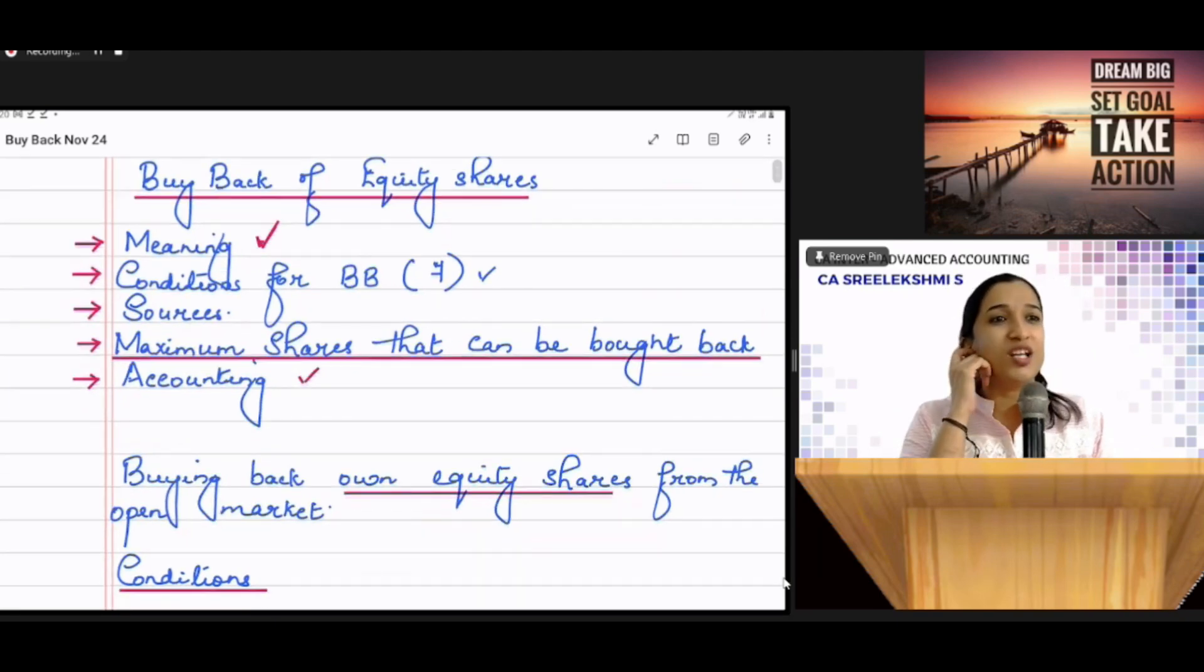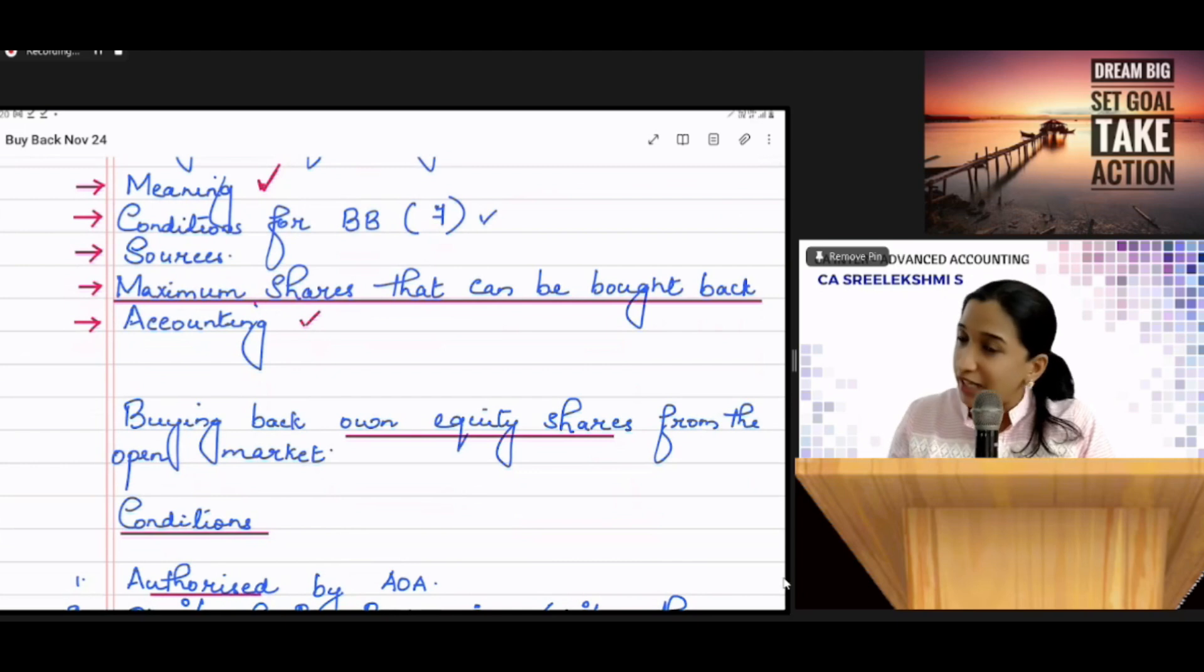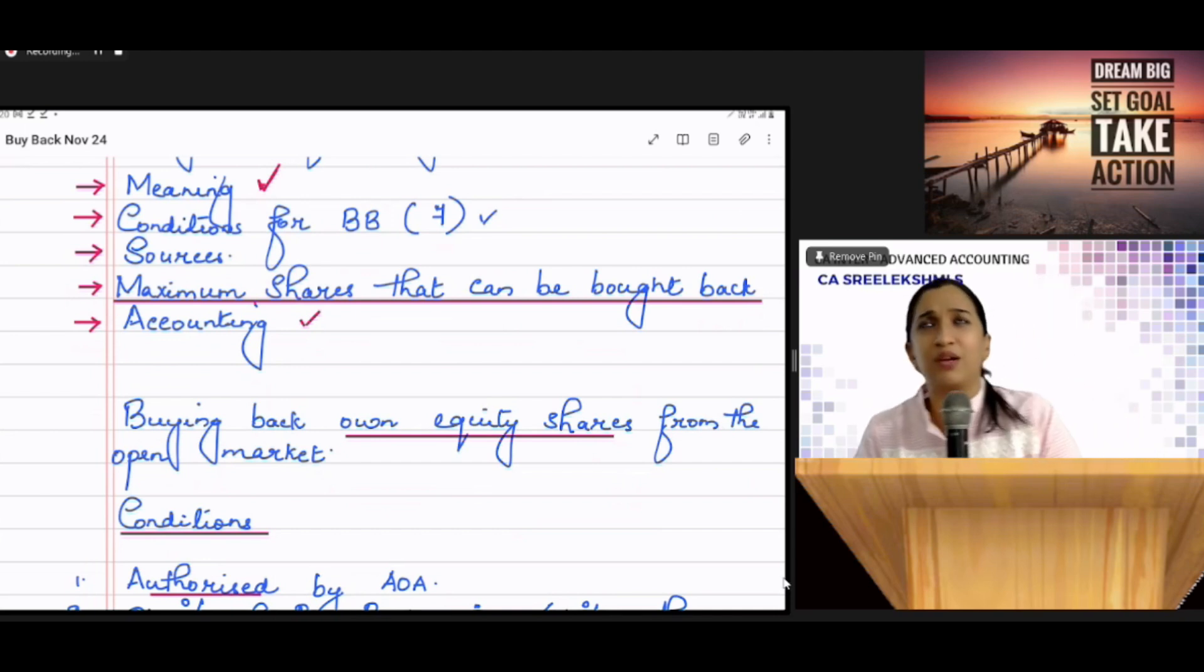So, sources. What are the sources for buyback? For buyback, I am applying my mind. For buyback, actually there will be cash outflow. From where I can raise funds. Sometime, they have asked, debentures are issued by the company to do buyback.